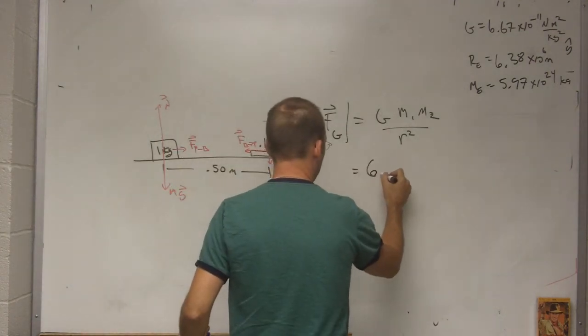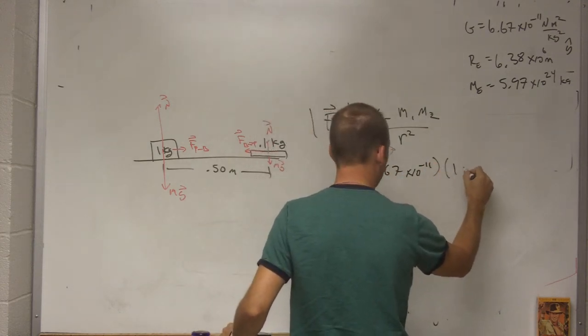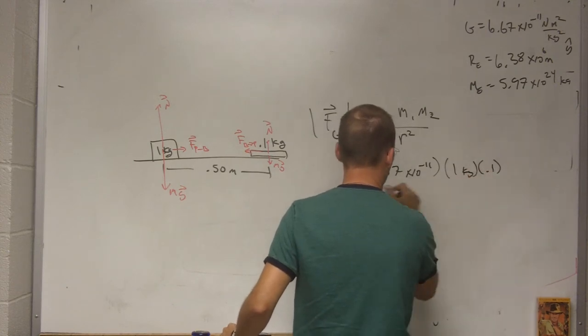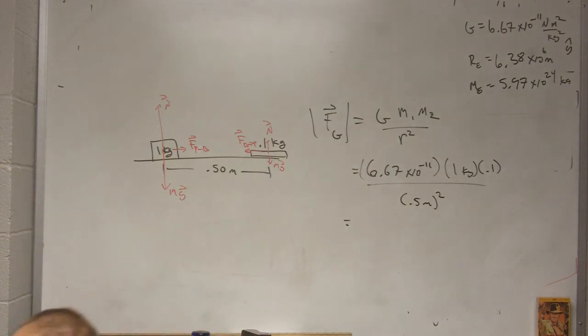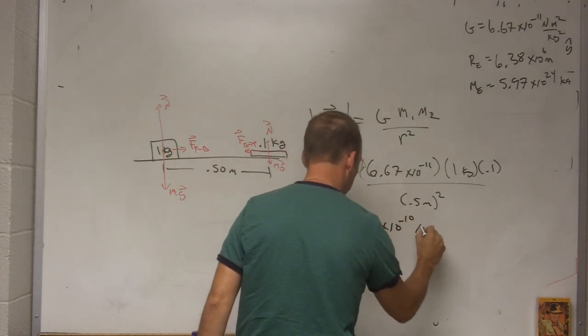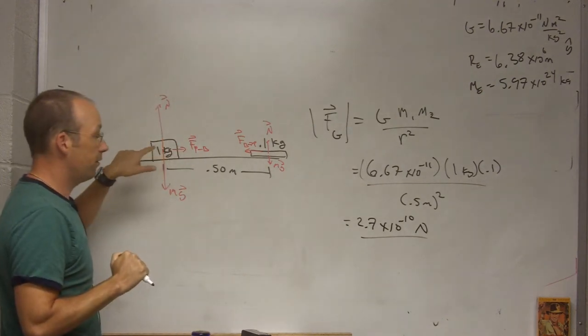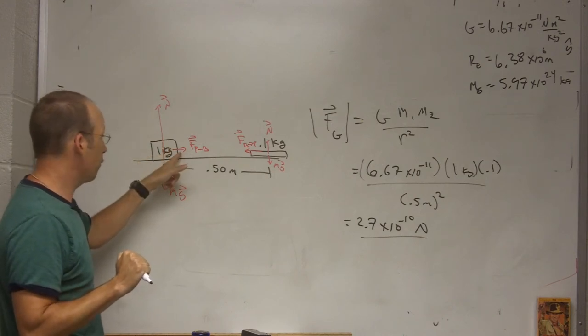So all I have to do is plug into this right here. So I have 6.67 times 10 to the negative 11th, I have 1 kilogram, 0.1 kilogram over the distance between them squared, 0.5 meters squared. Let me put it in my calculator. I get 2.7 times 10 to the negative 10th newtons. This force is extremely, extremely small. Gravity is an extremely weak force.